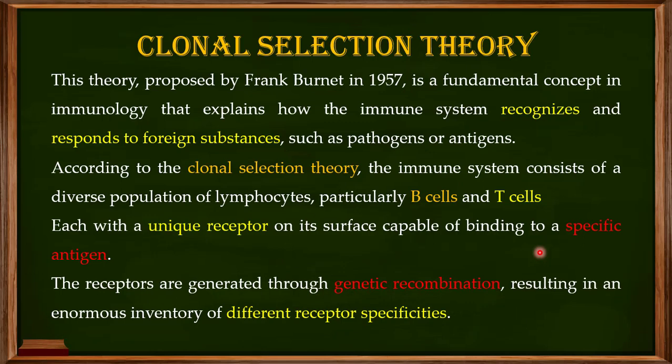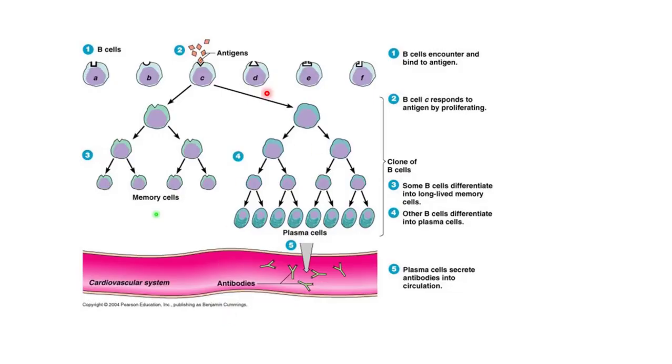These different types of receptors are produced by a mechanism known as genetic recombination. I will have a detailed discussion on genetic recombination and how different receptors are produced on the surface of immune cells in a later video. For now, just keep in mind that different kinds of receptors are produced through genetic recombination, resulting in an enormous inventory of different receptor specificities.